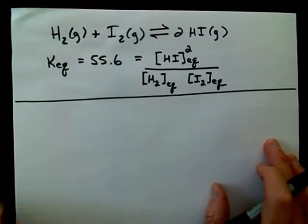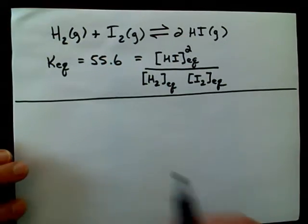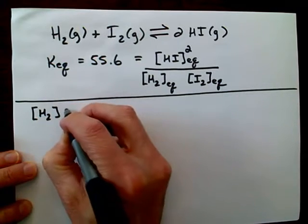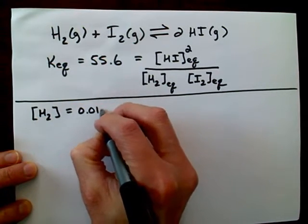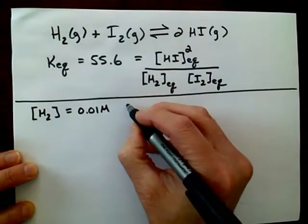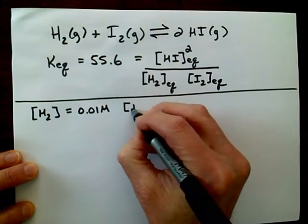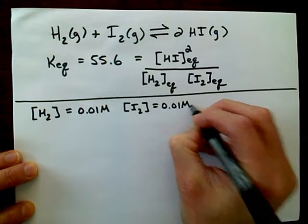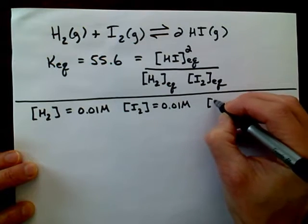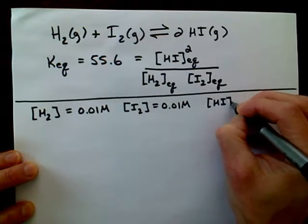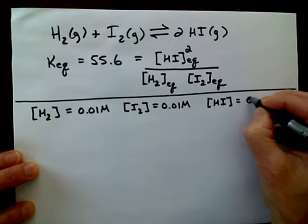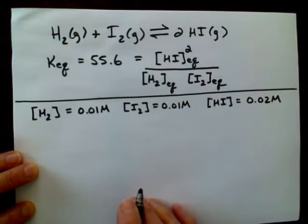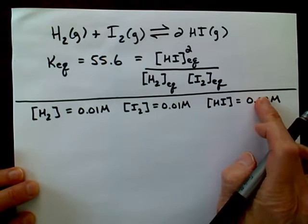Here's the way we do this. Let's suppose that we have a system where the concentration of hydrogen is 0.01 molar, the concentration of iodine is also 0.01 molar, and the concentration of HI is 0.02 molar.